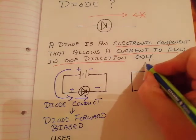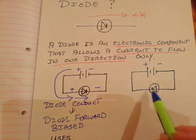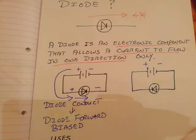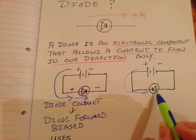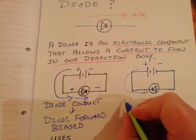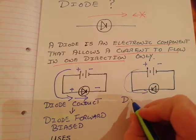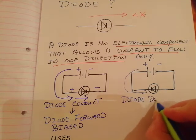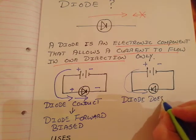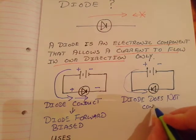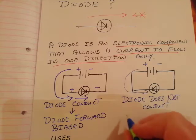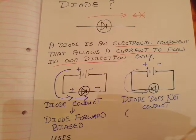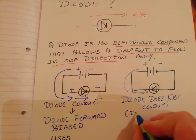Now the diode is switched around — the diode is reversed. Can electric current come that way? No, because the current is going against the arrow inside the diode. Something in the diode stops the current, so this time the diode does not conduct. If the diode doesn't conduct, what is the name for something that doesn't conduct electric current? It's an insulator.